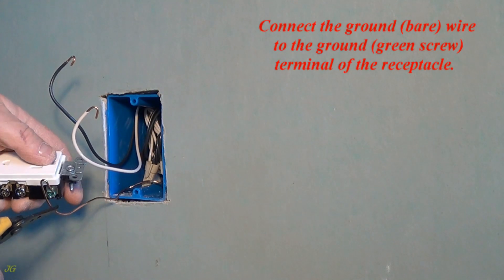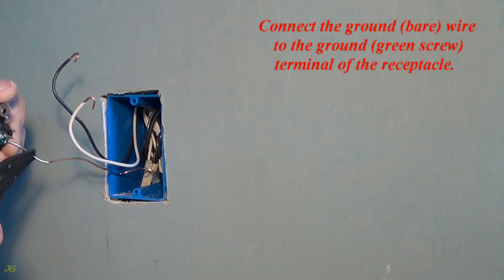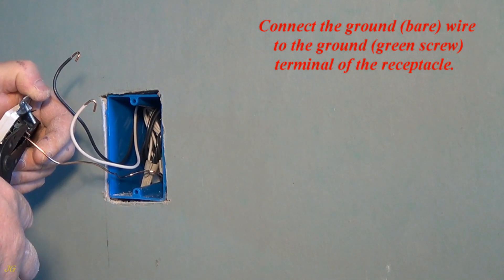Connect the ground bare wire to the ground green screw terminal of the receptacle.